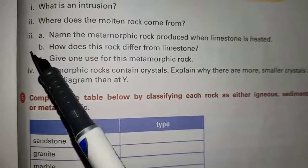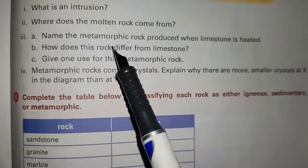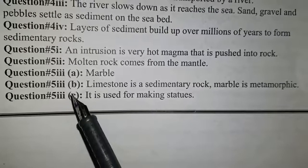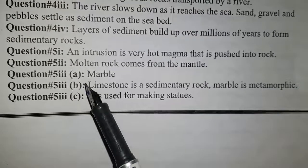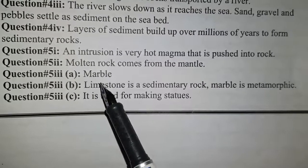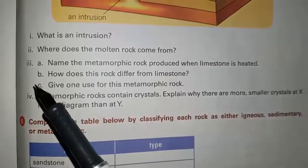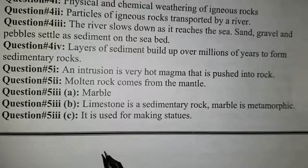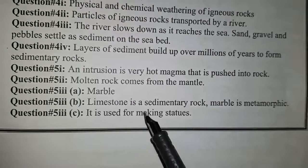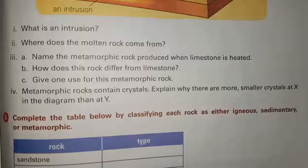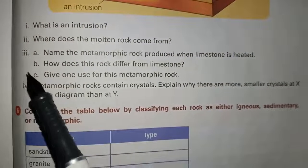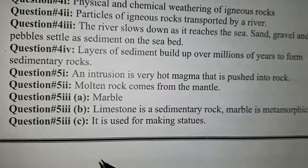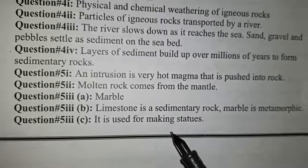Question number 5, part 3A: name the metamorphic rock produced when limestone is heated. The metamorphic rock produced by limestone is marble. Part 3B: how does this rock differ from limestone? Limestone is a sedimentary rock while marble is a metamorphic rock. Part 3C: give one use for this metamorphic rock. Answer: it is used for making statues.